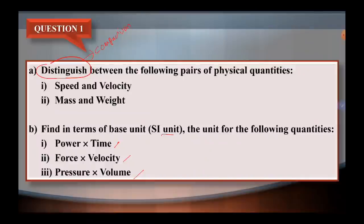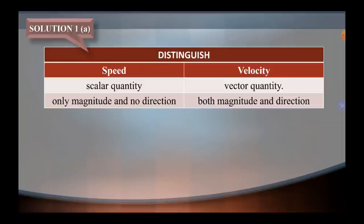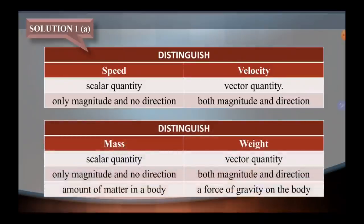Kita lihat kepada solution 1A. Distinguish between speed and velocity: yang pertama, speed is a scalar quantity, and velocity is a vector quantity. Speed is only magnitude and no direction, while velocity is a vector quantity with both magnitude and direction. Distinguish between mass and weight: mass is the scalar quantity and weight is the vector quantity. Mass is only magnitude and no direction, while weight has both magnitude and direction.